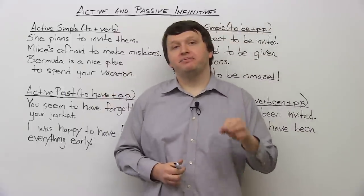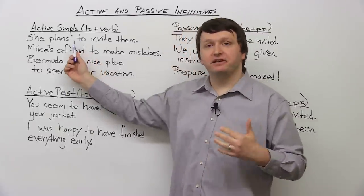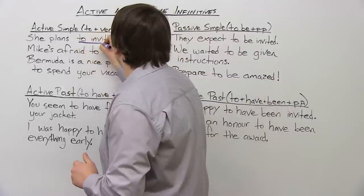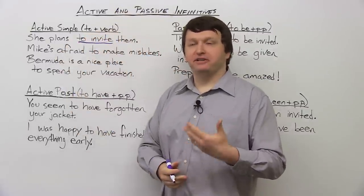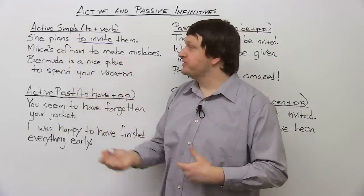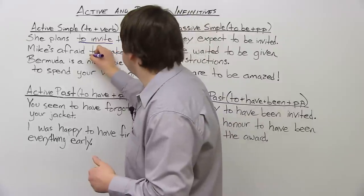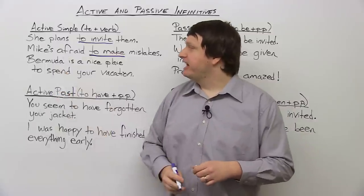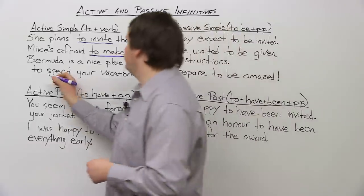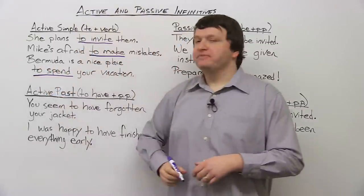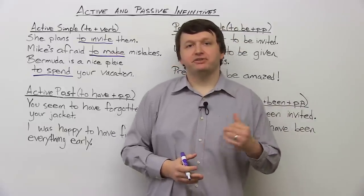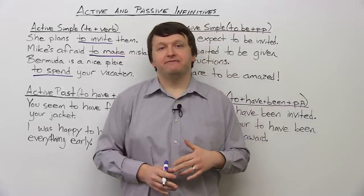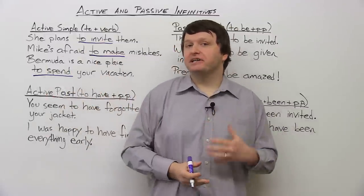First of all, let's look at the active simple, which is the most basic infinitive use. An infinitive is 'to' plus a base verb. So: 'She plans to invite them' — here, 'to invite' follows 'plan,' which always takes an infinitive. 'Mike is afraid to make mistakes' — many adjectives such as 'afraid' can be followed by an infinitive. And: 'Bermuda is a nice place to spend your vacation.' So this is the simple use of an infinitive. Certain verbs, many adjectives, and many noun phrases are all followed by infinitives.